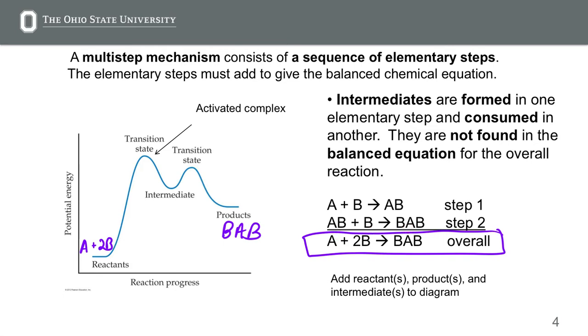You'll notice that if we add up these chemical equations like we add up mathematical equations, AB is going to cancel, because it shows up on the product of the first reaction and on the reactant side of the second reaction, which means AB is an intermediate.